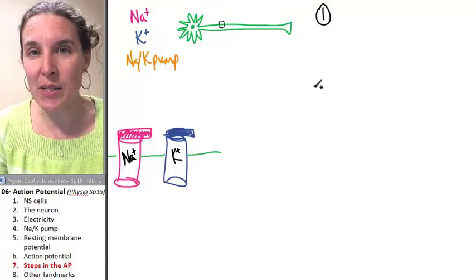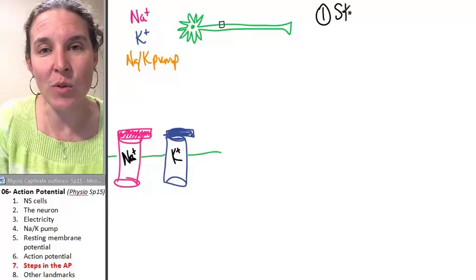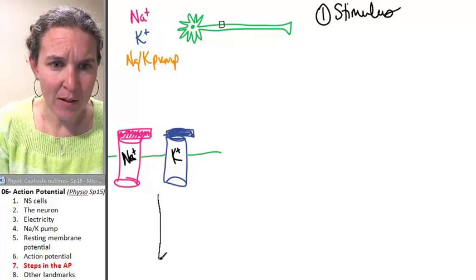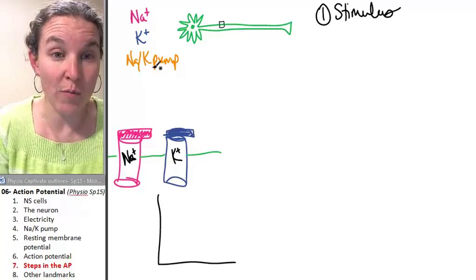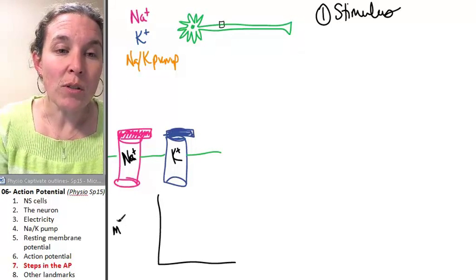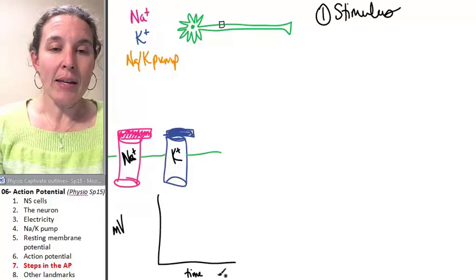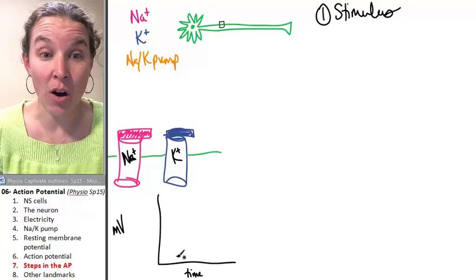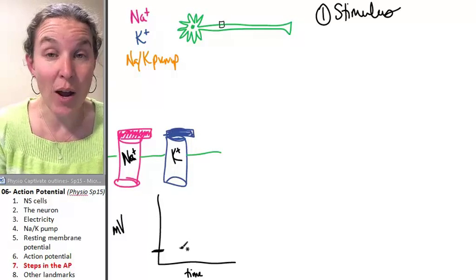Now, the first thing that happens if you want to fire an action potential, the first thing that has to happen is you have to have some sort of stimulus. And I am going to draw you a graph. And I am going to draw the graph down here. My graph is going to be millivolts on one side, and it is going to be time on the other.